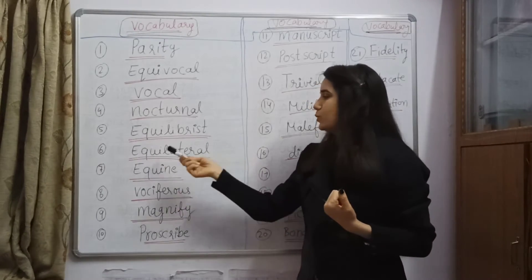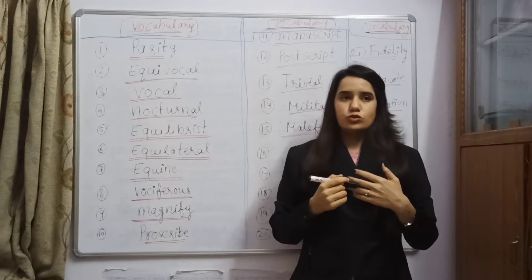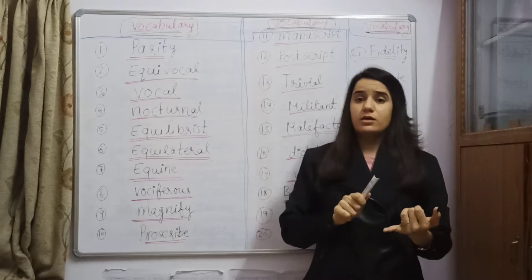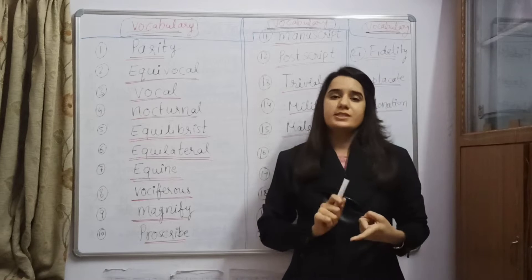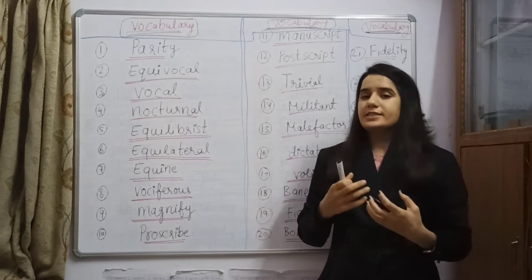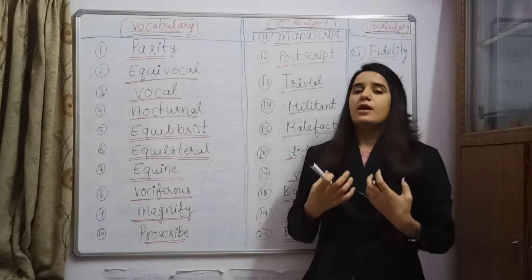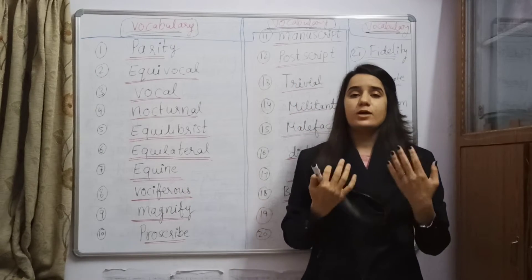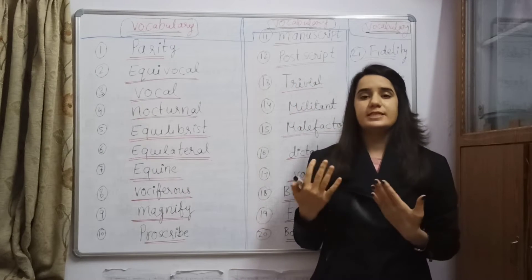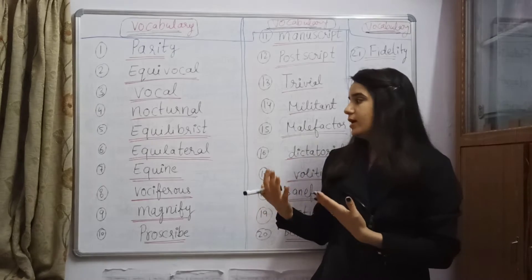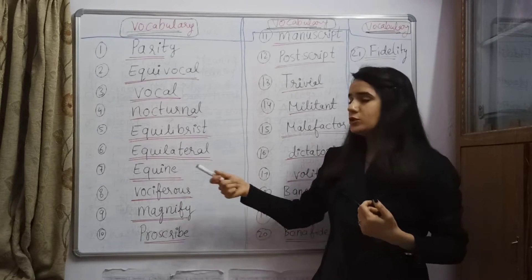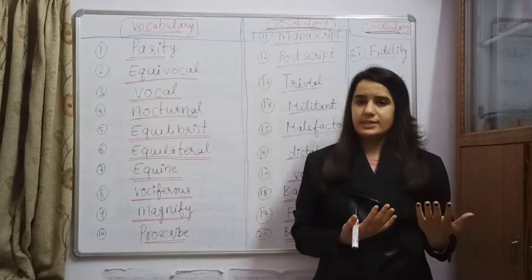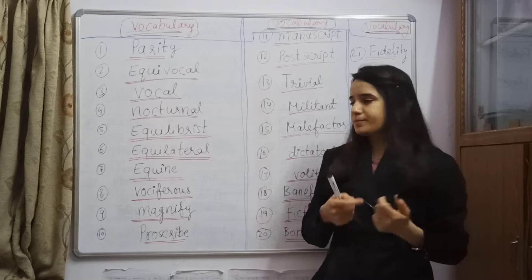Sixth is equilateral. Equilateral means shapes like triangle, rectangle, and square where all the sides are equal — we will say it is an equilateral shape. Seventh is equine. The one who has qualities like a horse, we will say he is equine. Because equine means horse, and the one who has horse-like characteristics, we will say he is equine.